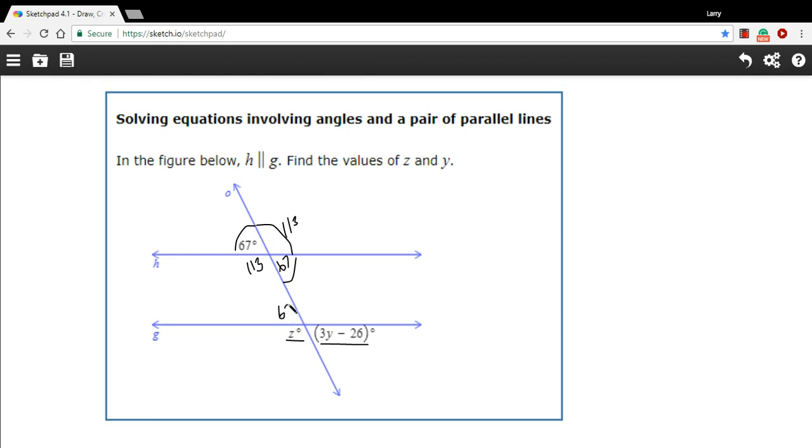This one's got to be 67. This one's got to be 67. So whatever 3y minus 26 is, it equals 67. And then this has to be 113. And this has to be 113. Okay, so we know all of the measures of the angles now, and actually we found z, z equals 113.